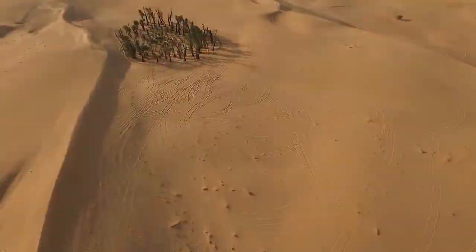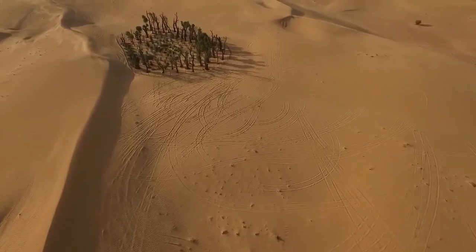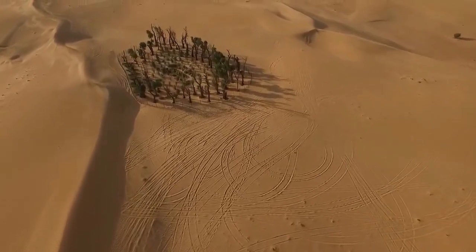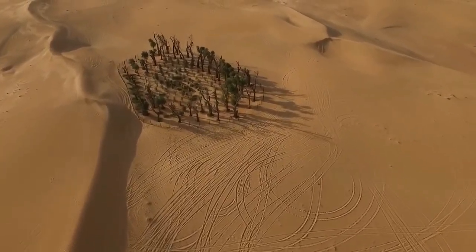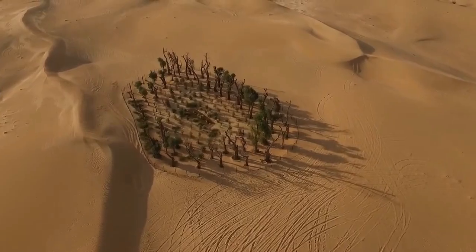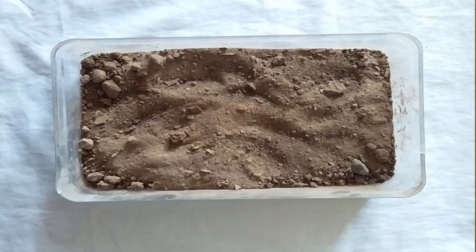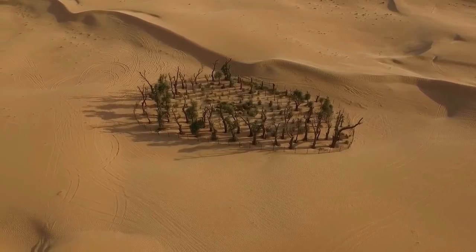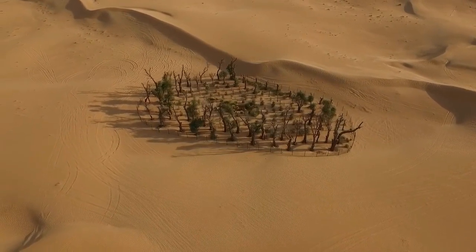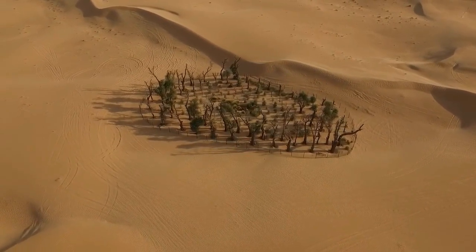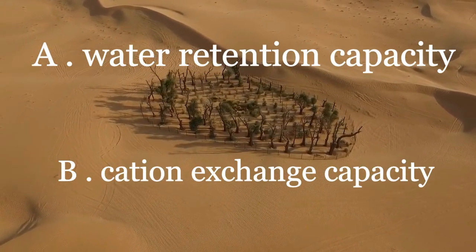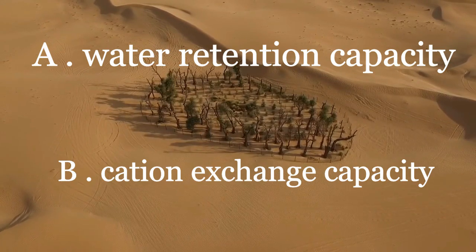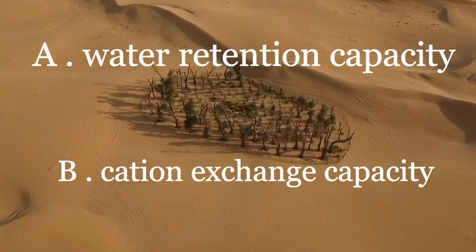To fully understand cation exchange capacity, we must first look at soil texture. A soil texture is determined by the percentage of clay, silt, sand, and organic matter in it. Soil texture is an important factor because it highly influences: A) its water retention capacity, and B) its cation exchange capacity.